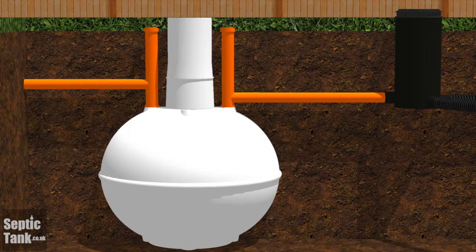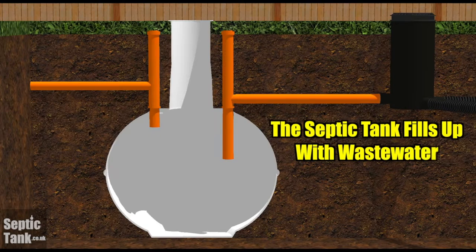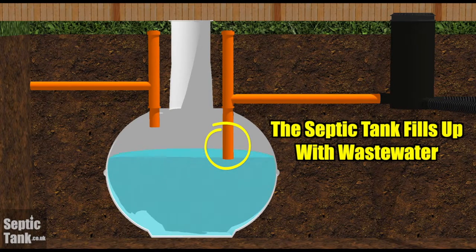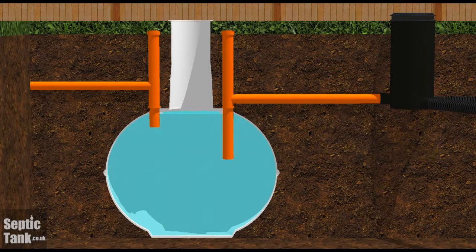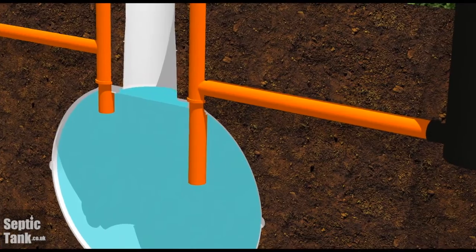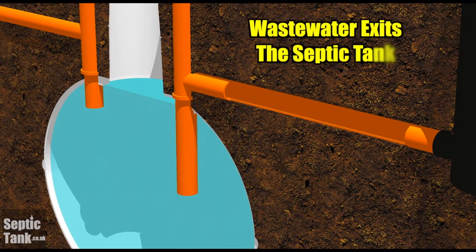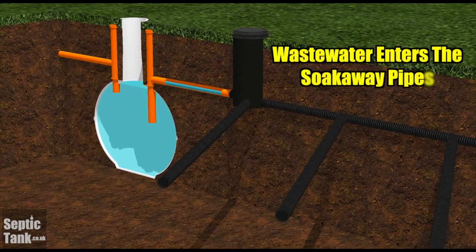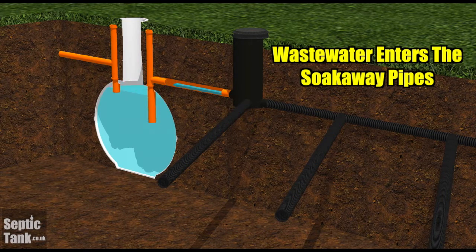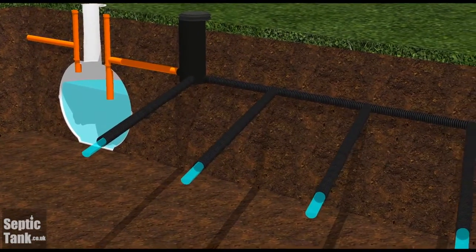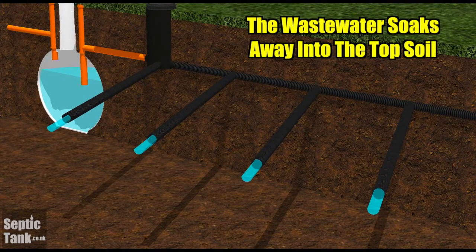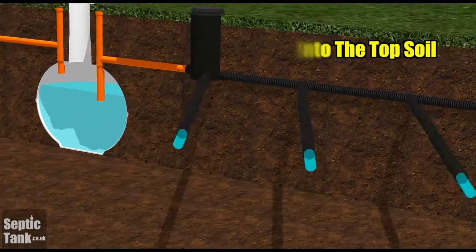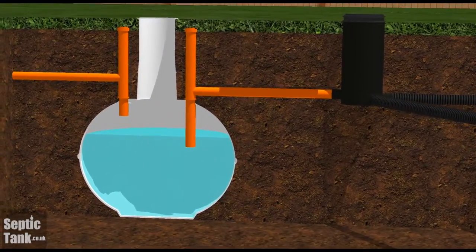Once the wastewater enters the septic tank, it fills up until the wastewater reaches the outlet pipe. The wastewater then exits via the outlet pipe from the septic tank towards the soakaway. Once it reaches the soakaway, the wastewater enters the soakaway pipes, where it soaks or drains away naturally into the topsoil. That's the basic function of how a septic tank and soakaway work.